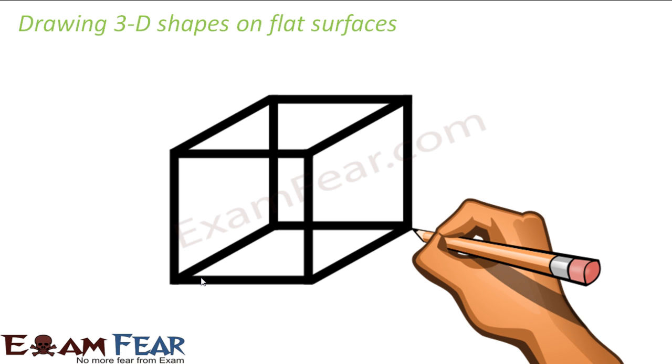It's going to be really challenging to draw a three-dimensional object on a two-dimensional surface. This needs some special technique. We will talk about two such techniques: one is oblique sketching and the other one is isometric sketching. We will discuss each of them in detail. Thank you.